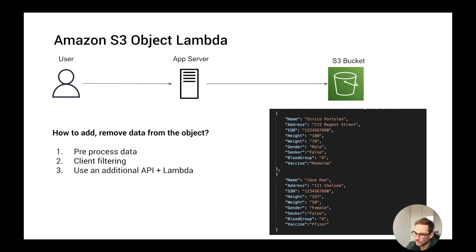The first approach without S3 Object Lambda is to pre-process the data. So if you want to anonymize the JSON file, you have to create an external service or a Lambda function to pre-process the data every time the user is asking for it or every time a process needs the data anonymized. You need to maintain a proxy server or a proxy Lambda that gets the original object and transforms it to be anonymous. This is not a great approach.